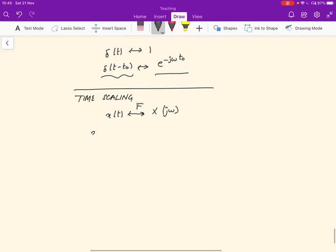then when you make the function x(at) in the time domain, then that's going to result in something that gets scaled by one over A, X j omega by A.